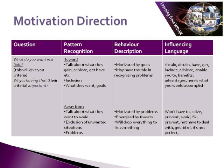People with a toward pattern talk about what they gain, achieve, get, have, and the goals they want to achieve. They are very much motivated by goals and may have trouble recognising problems — it's all about getting the goal. If you want to influence a person with this pattern, you'll want to use words like attain, obtain, have, get, include, achieve, enable you to, benefits, the advantages, here's what you would accomplish.